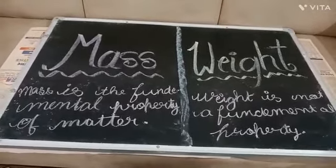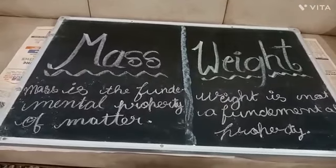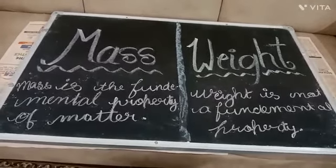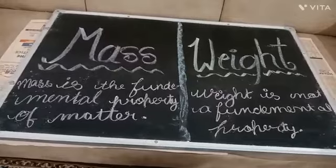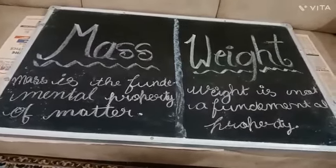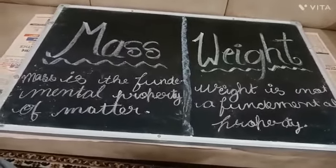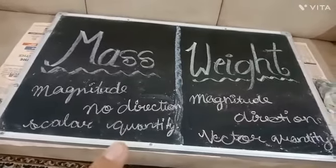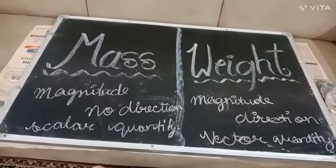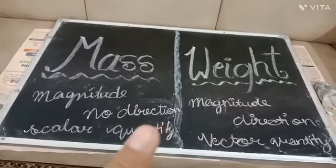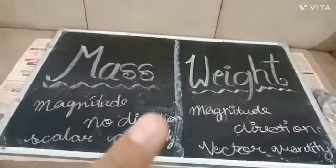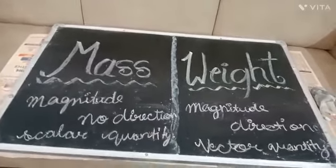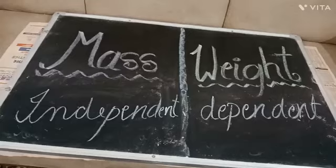Mass is the fundamental property of matter — it is an intrinsic property. Weight is not a fundamental property because we measure weight based on gravity. Mass contains magnitude but no direction, so it is a scalar quantity, while weight contains both magnitude and direction, making it a vector quantity.